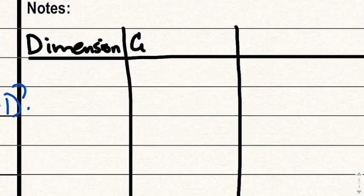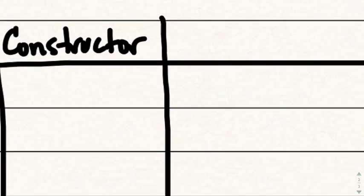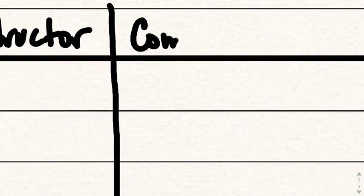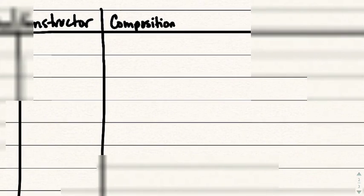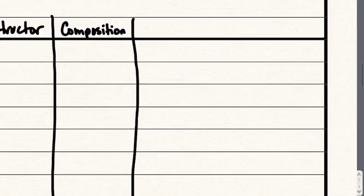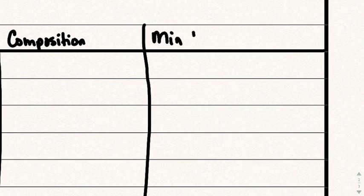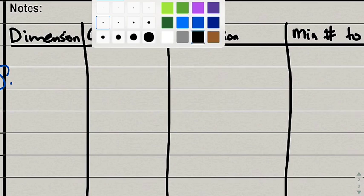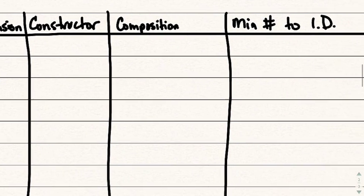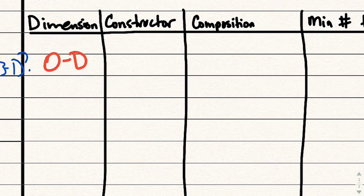Here's the chart: let's talk about the dimension, then identify the constructor — what it is, like point, line, plane — then the composition, meaning what it's made out of, and then the minimum number to identify it. I'll explain what that means as we get to it. Let's start with our friend 0D. Zero-D does refer to a point.